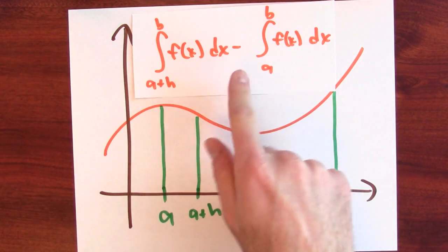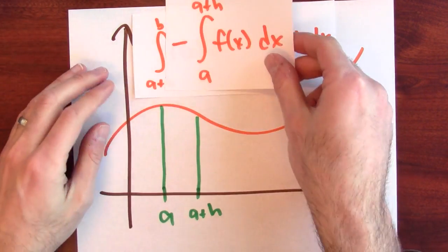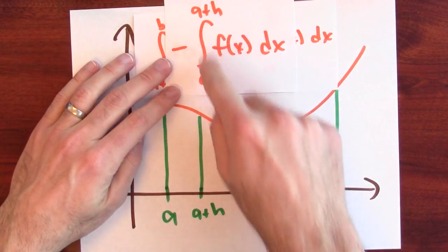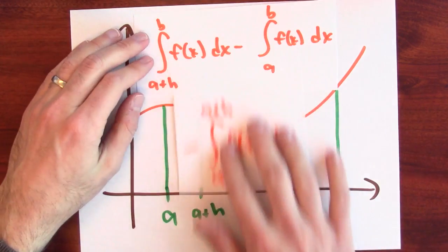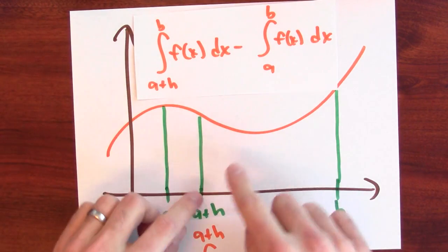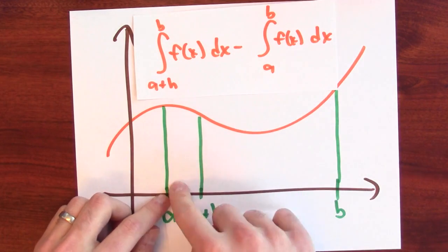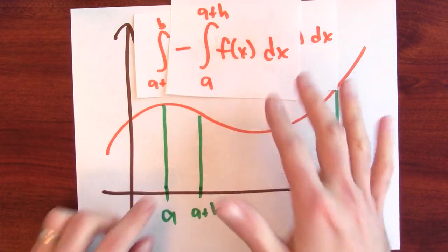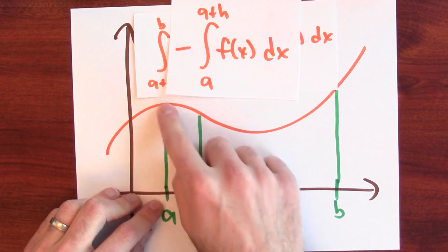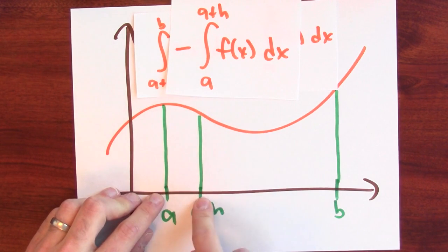Now, if you think about it, what this is really calculating is related to the integral from just a plus h. This integral is calculating this area and subtracting this larger area. So the difference is really just this area in here between a and a plus h.